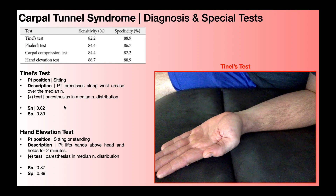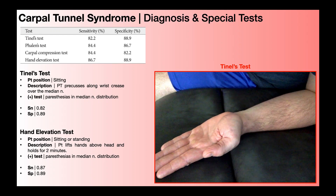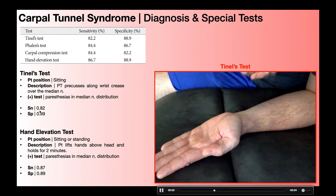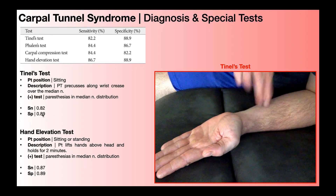Next is Tinel's test. Anytime you hear the word Tinel, you need to think of percussing a nerve. The patient is seated with their arm face up on a table, and the clinician percusses along the wrist crease over the median nerve distribution. Sometimes they'll start a little proximal to the wrist, but making sure to go at least up to that wrist crease. A positive test is paresthesias in the median nerve distribution. The sensitivity is 82% and specificity is 89%.